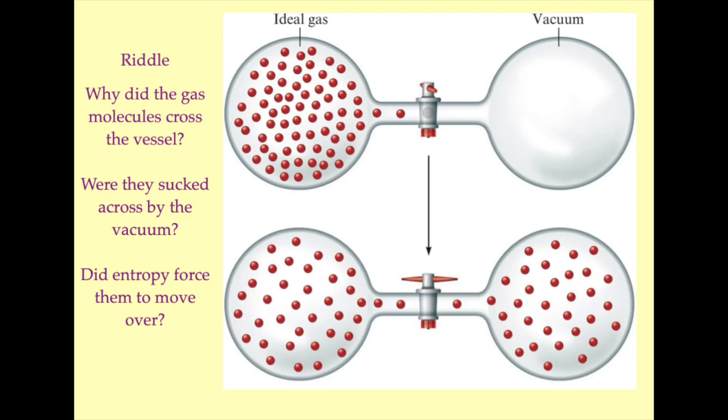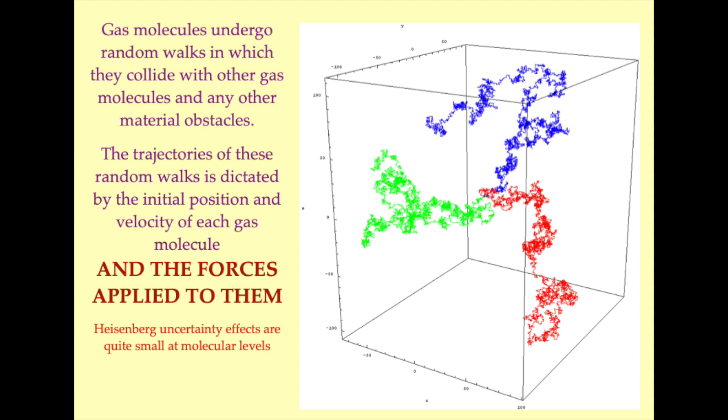Returning our attention to the example we discussed earlier, why is it that when the valve between the two vessels is opened, gas molecules start to move from the left-hand vessel into the right-hand vessel? Is entropy forcing this to happen? Is the vacuum on the right-hand side sucking the molecules in? Our understanding of what's going on here is going to shape our understanding of how the atmosphere responds to the forces applied to it.